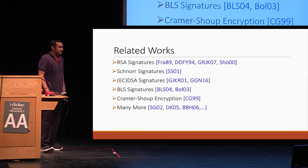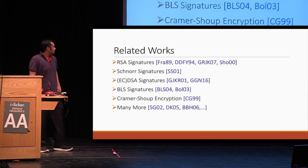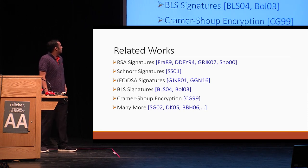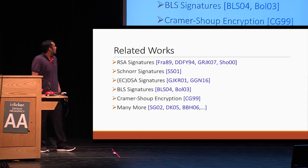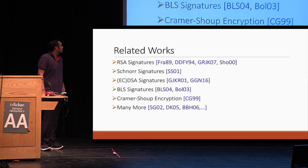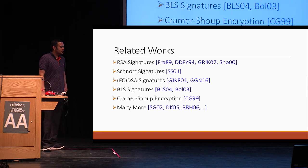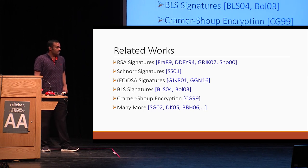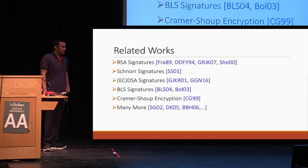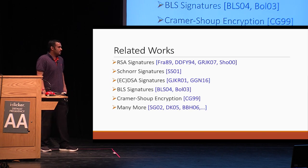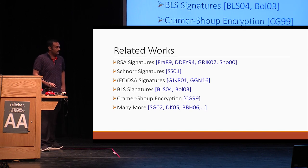There has been tons and tons of work in this area. There's been work on RSA signatures, Schnorr signatures, ECDSA signatures, BLS signatures, Cramer-Shoup encryption, and many other works. But most of these works have focused on specific primitives. Here we would like to focus more on a general framework to capture these primitives.